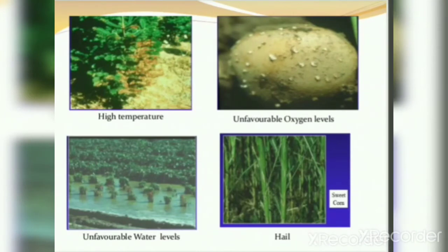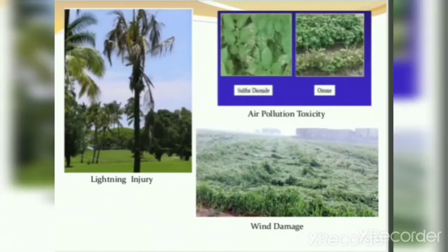Symptoms of non-infectious diseases include those caused by high temperature and unfavorable oxygen level — you can see this in potato. Unfavorable water level and hail can be seen in sweet corn. Lightning injury affects coconut. Sulfur dioxide, ozone, air pollution toxicity, and wind damage are other examples of non-infectious plant disease symptoms.